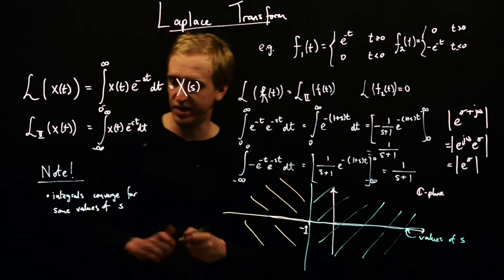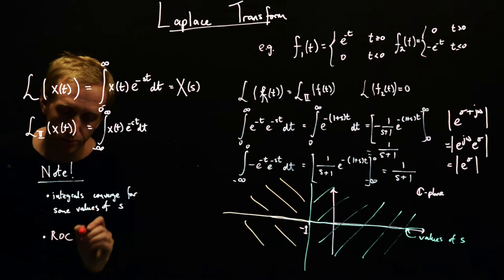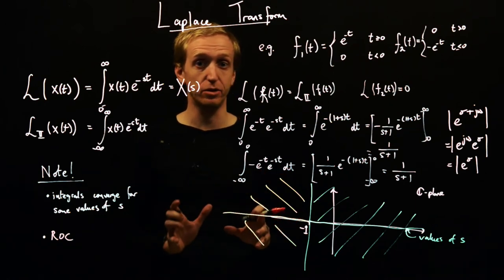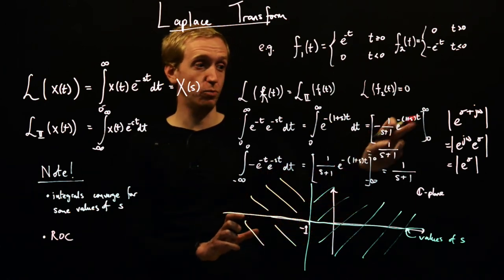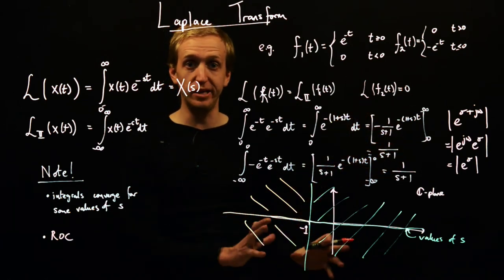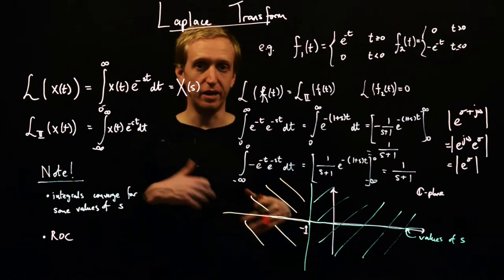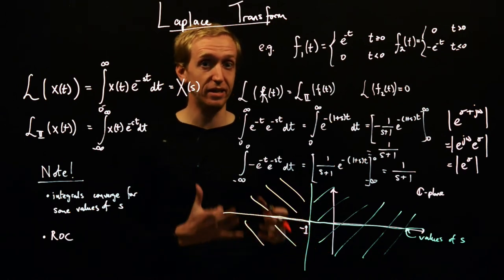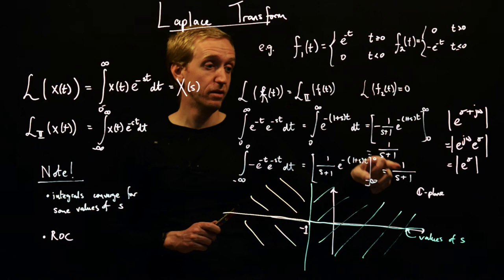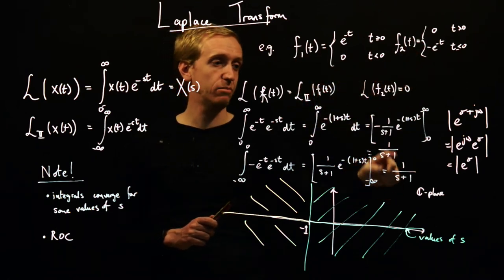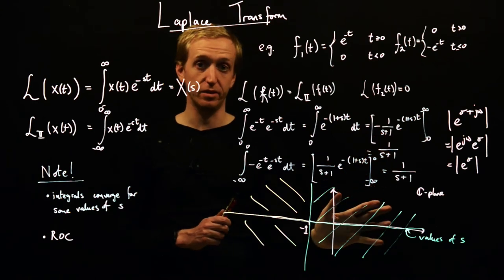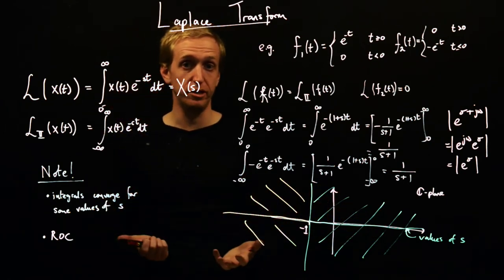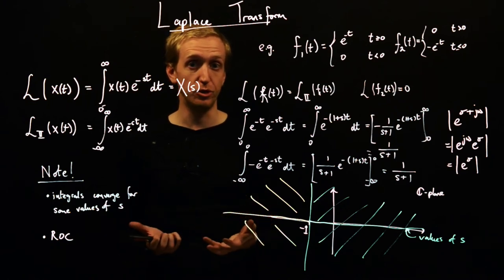The take-home message from all of this is that when looking at Laplace transforms, the transformation is only valid for particular values of s, found by looking at when the integrals converge — that region is the region of convergence. In order to make sense of the Laplace transform, you have to keep track of the region of convergence. We see here that these two functions are different but they had the same Laplace transform; the only difference was that the regions of convergence were different.